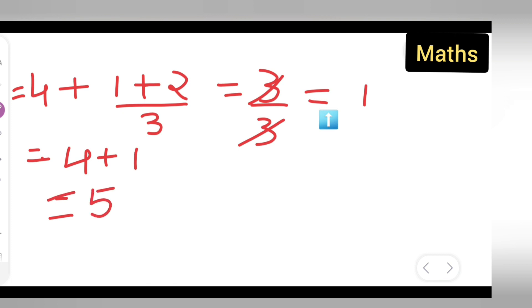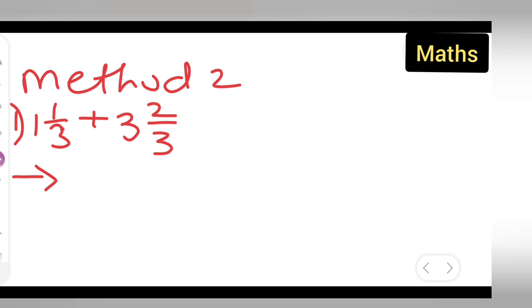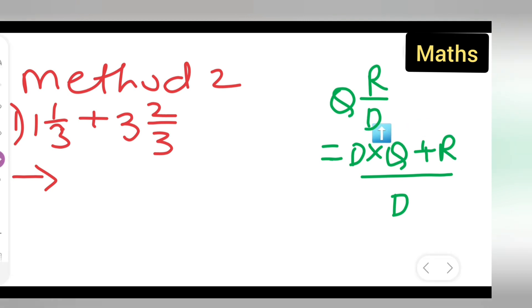That was Method 1. Now for Method 2, the same problem: one and one-upon-three plus three and two-upon-three. The formula is: multiply the denominator by the quotient, add the remainder, and place that over the denominator. So a mixed fraction becomes denominator times whole number plus numerator, all upon the denominator.